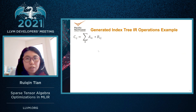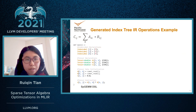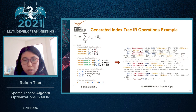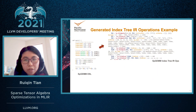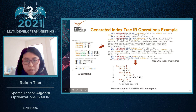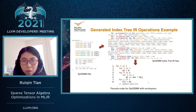For a code generation example, given the SpGEMM expression, the DSL is compiled into index tree IR operations. Based on the index tree IR operations, we then generate the MLIR code. The code shown here illustrates the structure of the generated code, which is actual MLIR code.